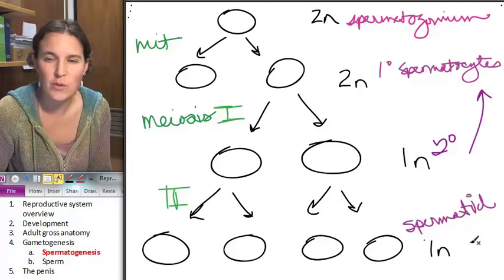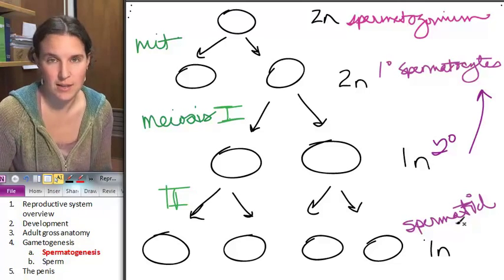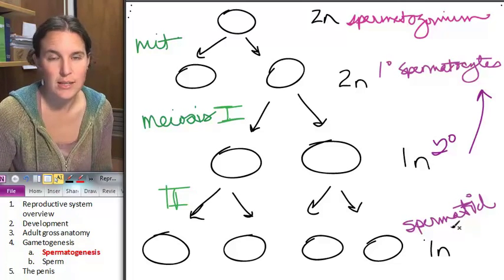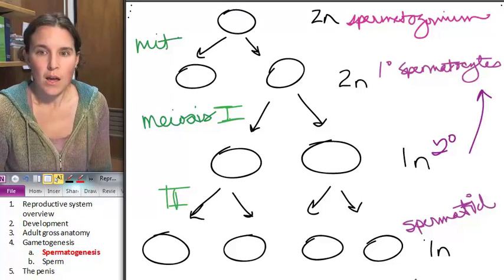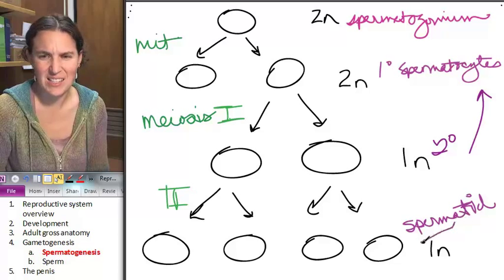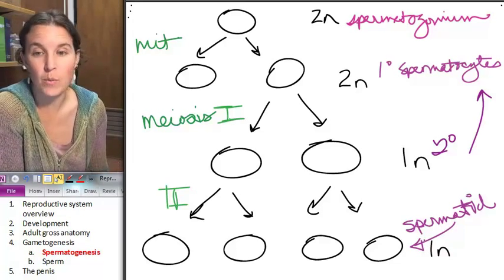See, cursive requires delayed gratification. You can't cross your T until the end. Then you cross your T's and dot your I's. Not very good at that. These are spermatids? What? Come on. Why aren't they sperm? What has to happen? There's a huge hint here, my friends.